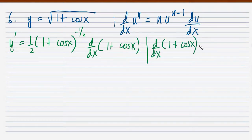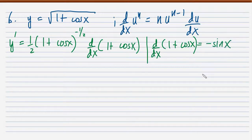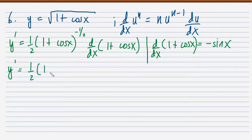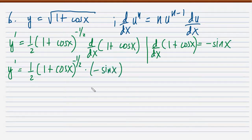The derivative of 1 plus cosine x: the derivative of 1 is 0, and the derivative of cosine x is negative sine x. So substituting back, we get 1 half times (1 plus cosine x) raised to negative 1 half, then multiplied by negative sine x.